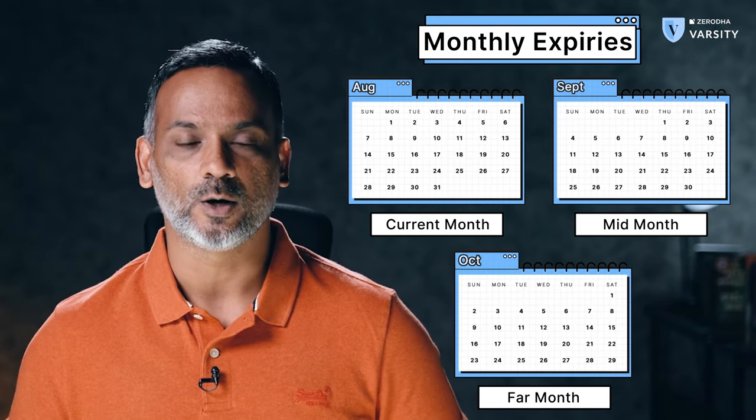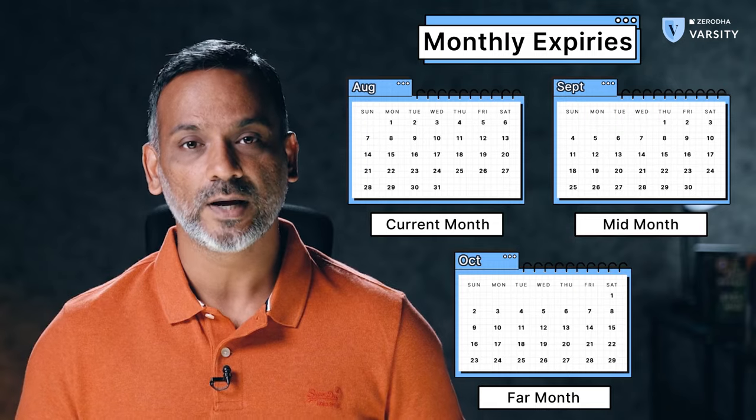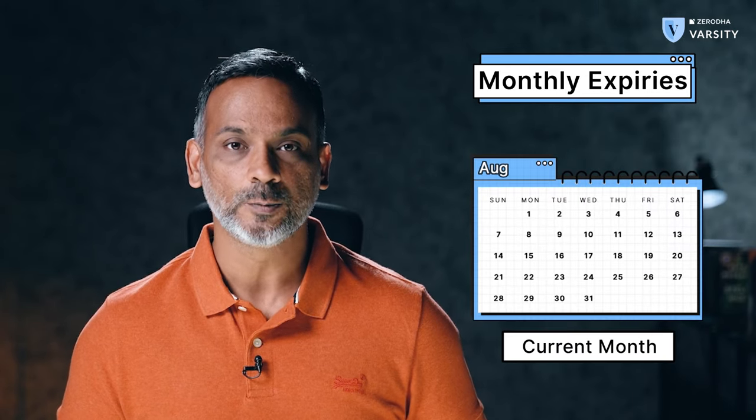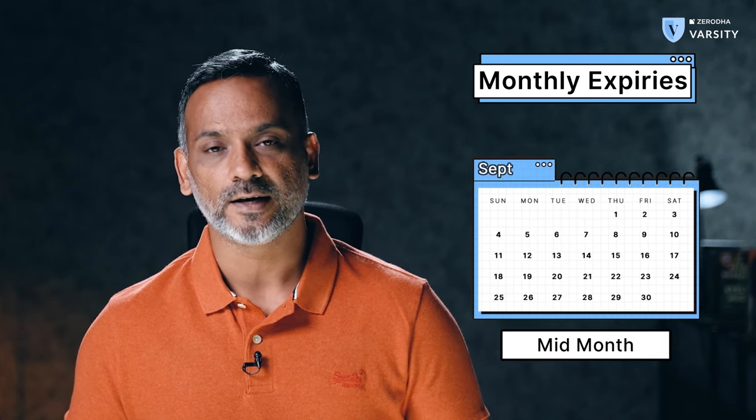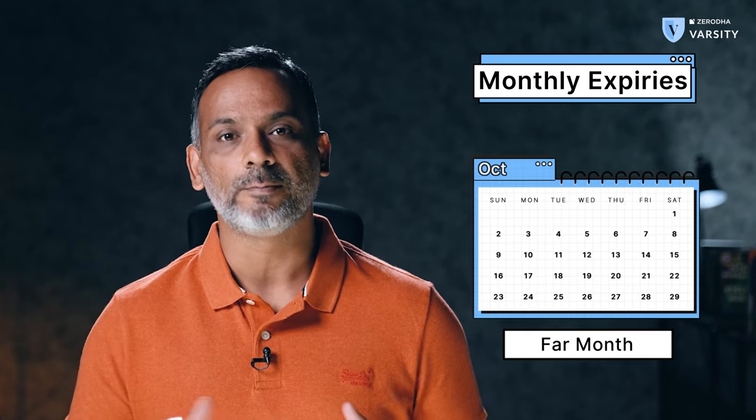Before we understand what rollover is, you need to understand that any given monthly futures contract in India has three expiries to it: current month, mid month, and far month contract. For example, we are in the month of August 2022. August 2022 becomes the current month contract, September 2022 becomes the mid month contract, and October 2022 becomes the far month contract.